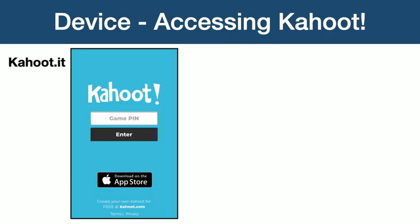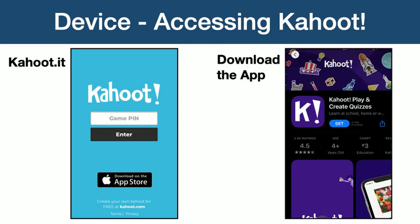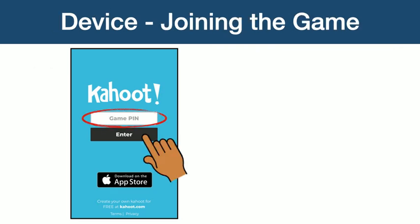There are two different ways you can access the Kahoot on your device. The first is by going to your tablet or mobile phone's browser and typing in Kahoot.it into the address bar. This will bring up a screen for you to enter the pin and start playing. Alternatively, you can download the Kahoot app onto your device. Either way, you join the Kahoot by entering the game pin on your device.